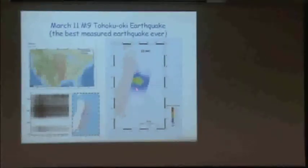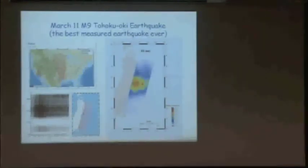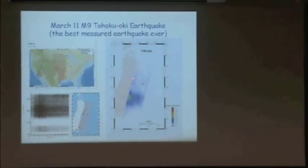This analysis was done from high-frequency waves using the US Array network, which is slowly moving across the US collecting data for two years at a time, moving eastward from California. What you can see is that the rupture — the release of energy — happens at different places on the fault at different times.